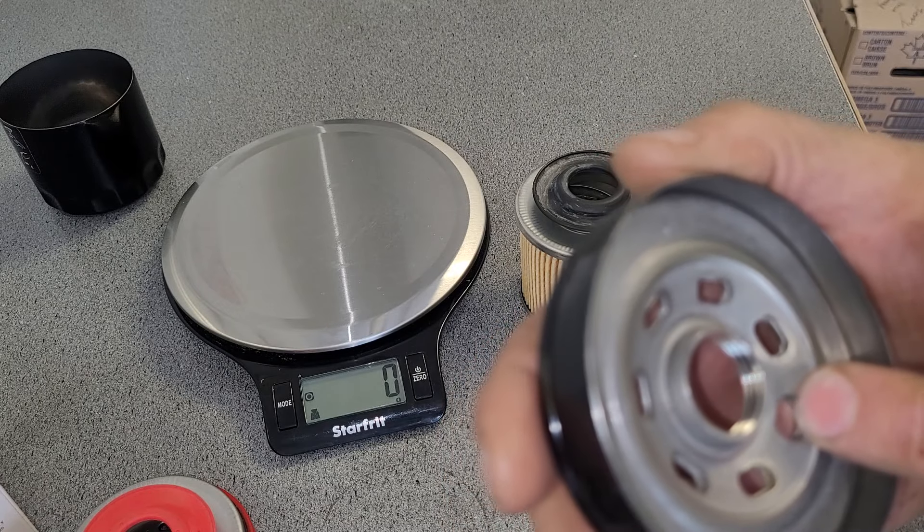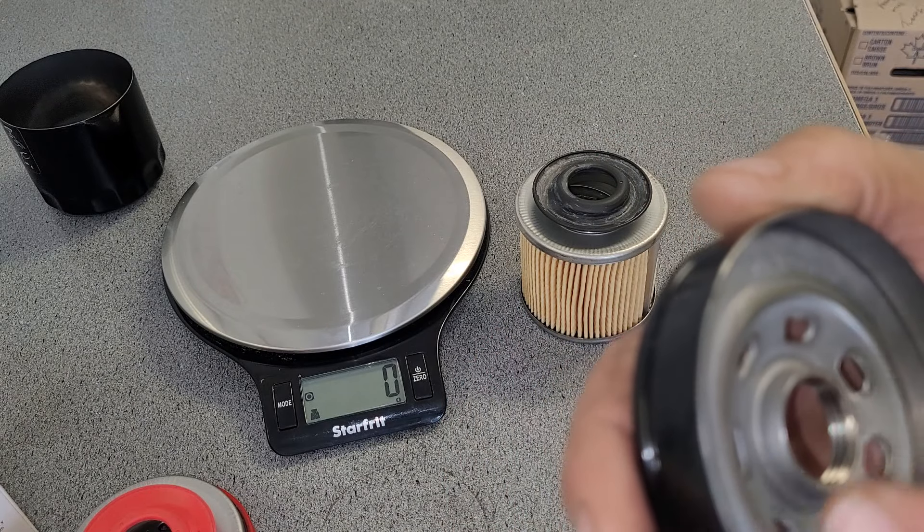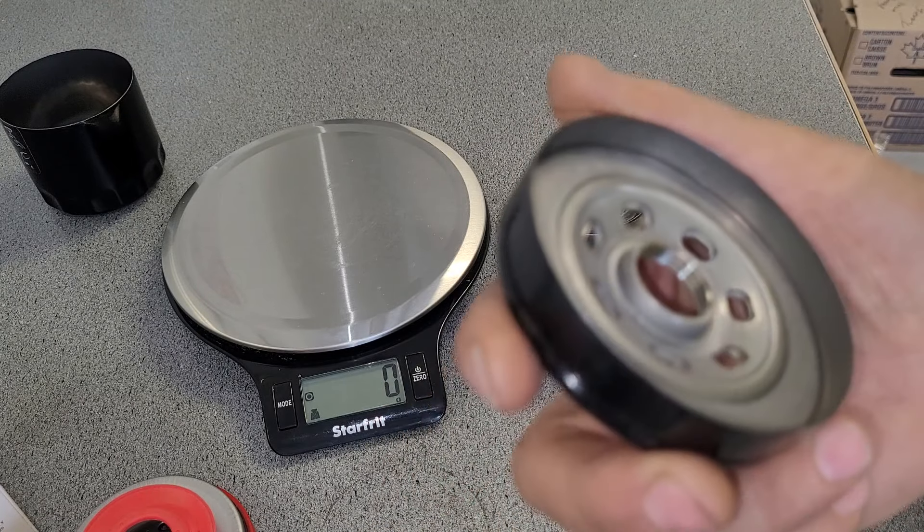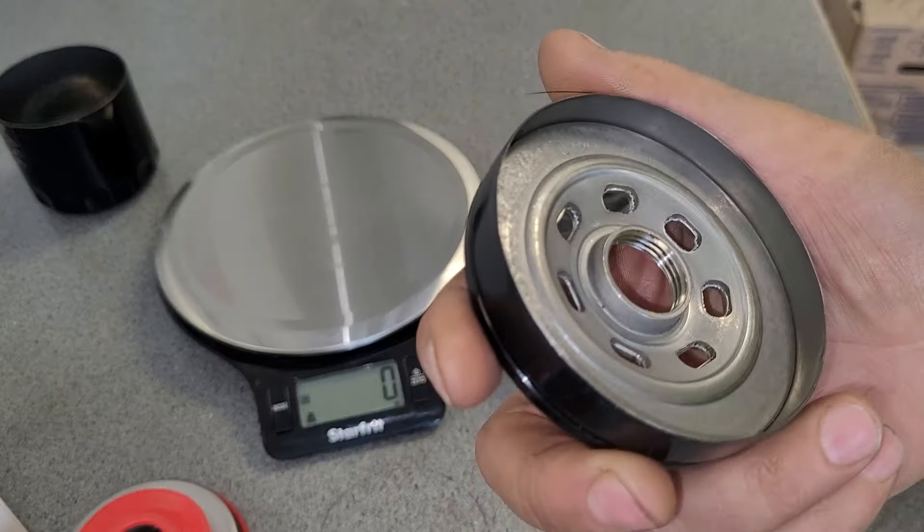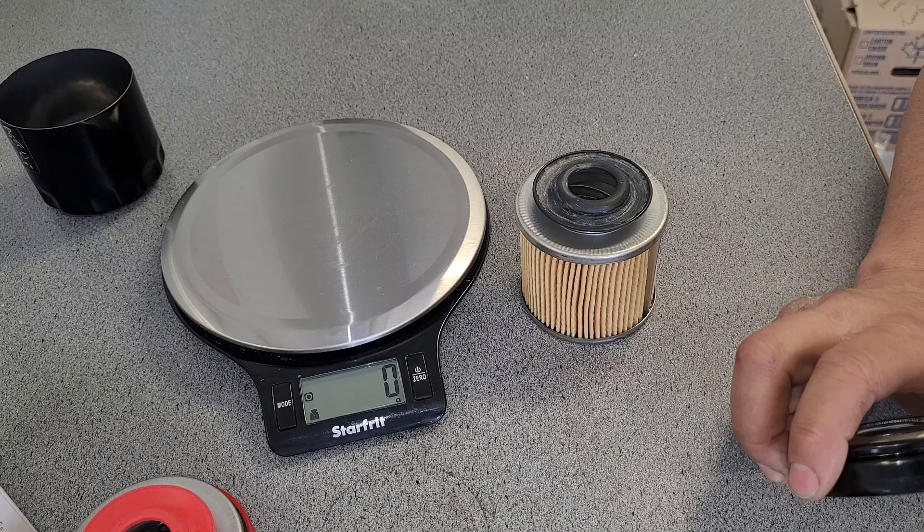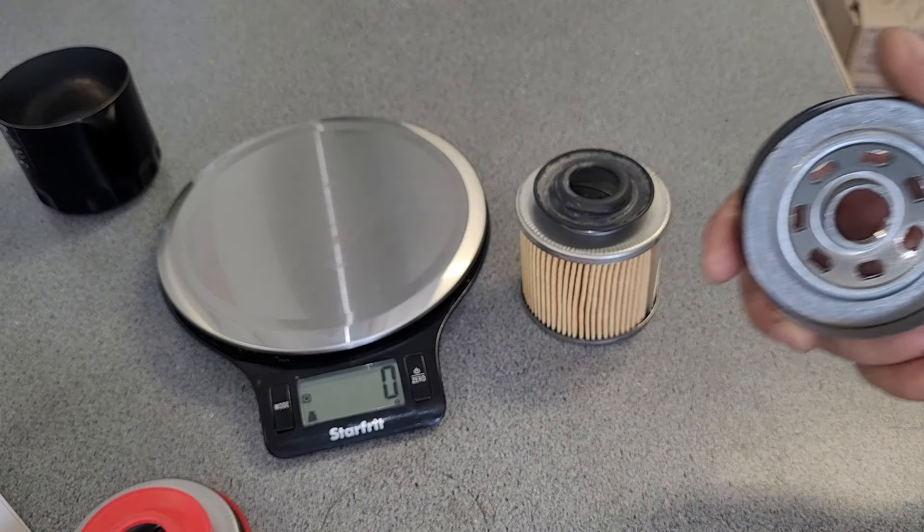But I got to say though, it is made to Mopar Chrysler Mopar specifications that they give the company to make their filter. So there's some things made in this one that might not be made in that one. That's the way that works. Cup, 43 grams. You can do something with these cups. They're awesome.